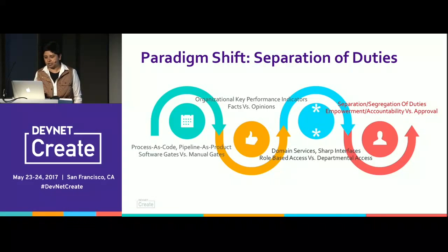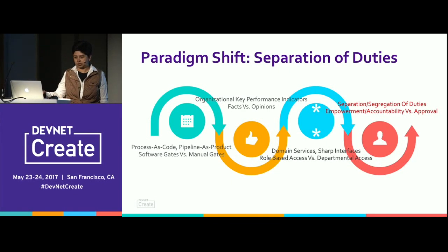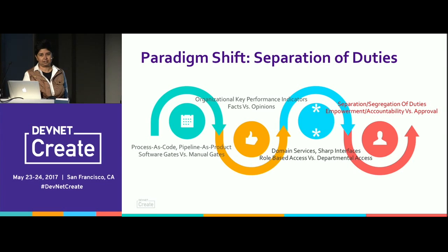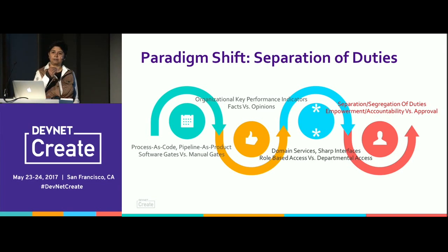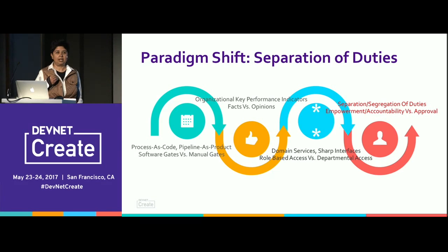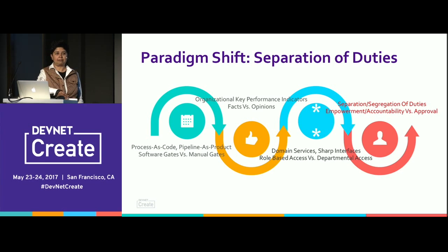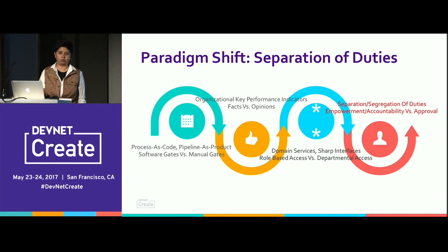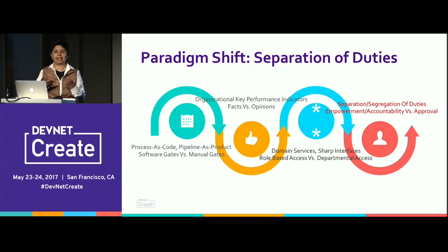We are looking at a paradigm shift. Separation of duties means we need processes as code. Pipeline is a product — the product that flows through the pipeline is the one that makes money. But if we don't treat the pipeline as a first-class citizen, how can we trust it to ship our products? Software gates versus manual gates is the paradigm shift. We don't need a human to come and stamp approval; we can have the pipeline decide for itself because we design the gates ourselves.